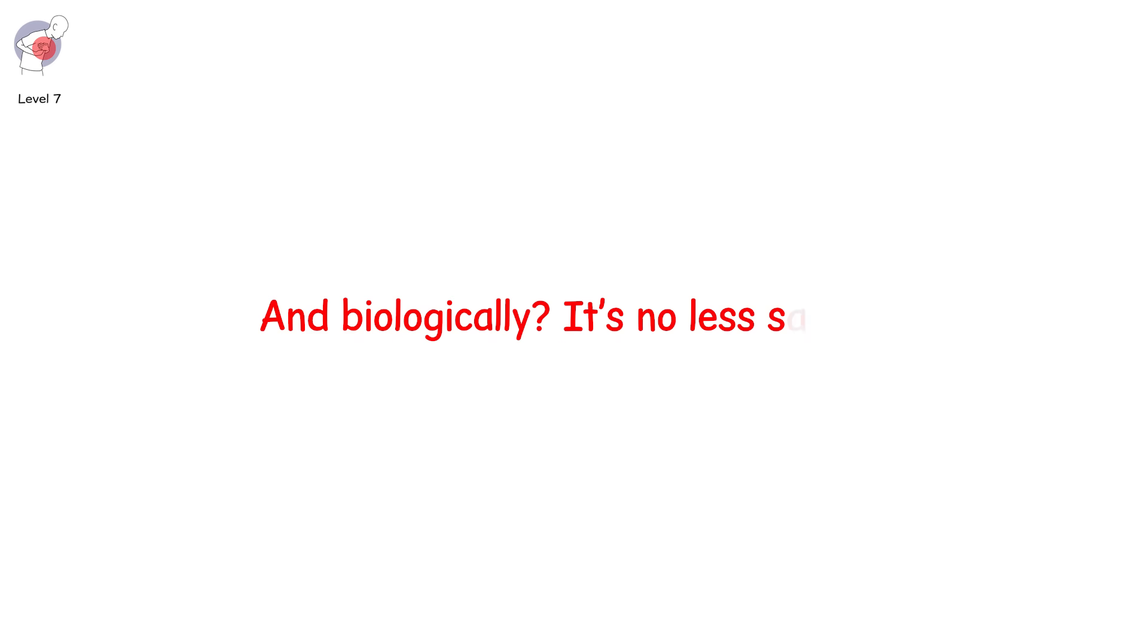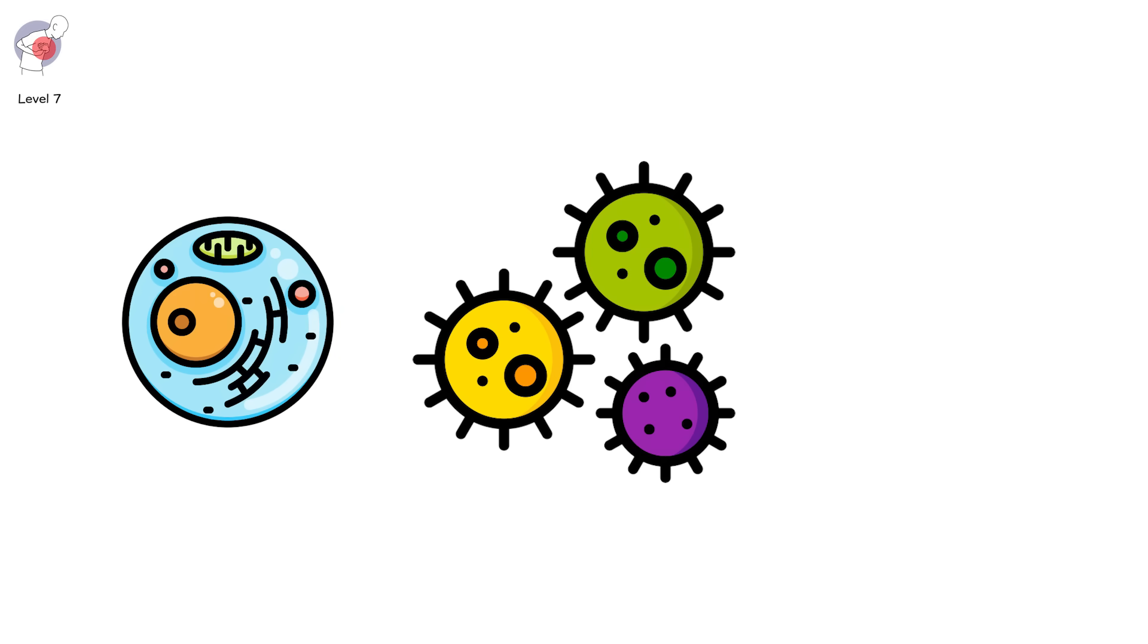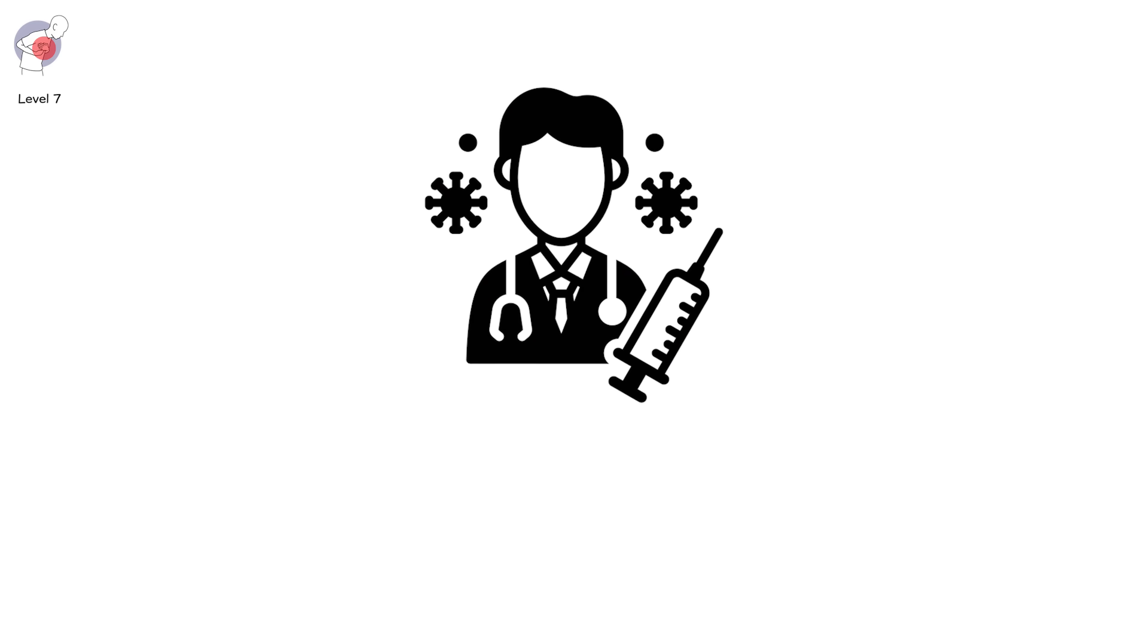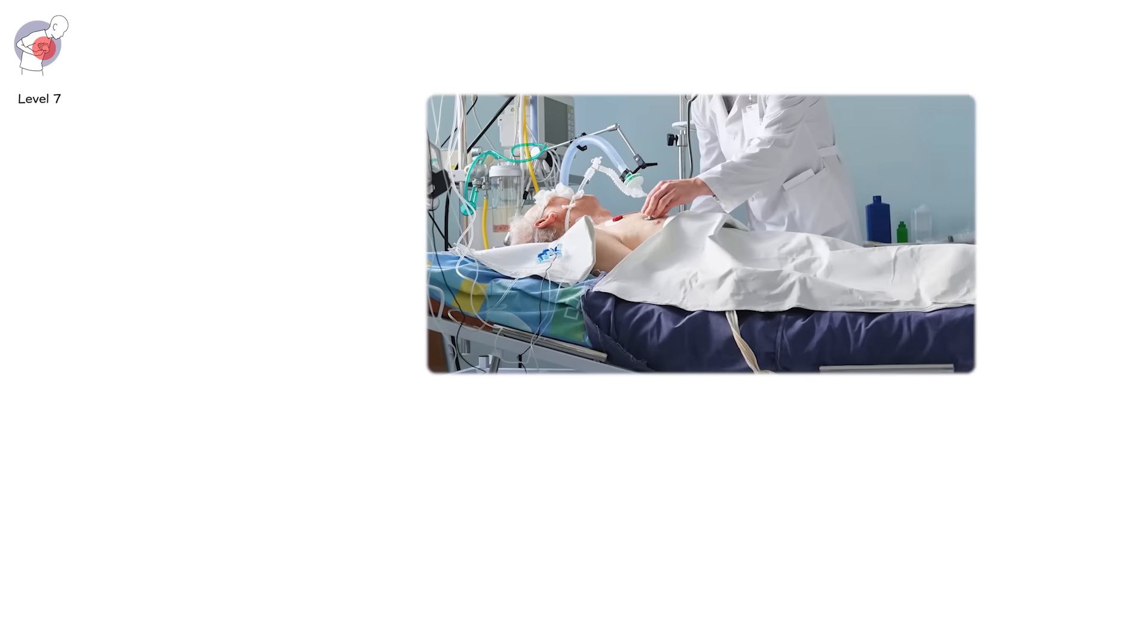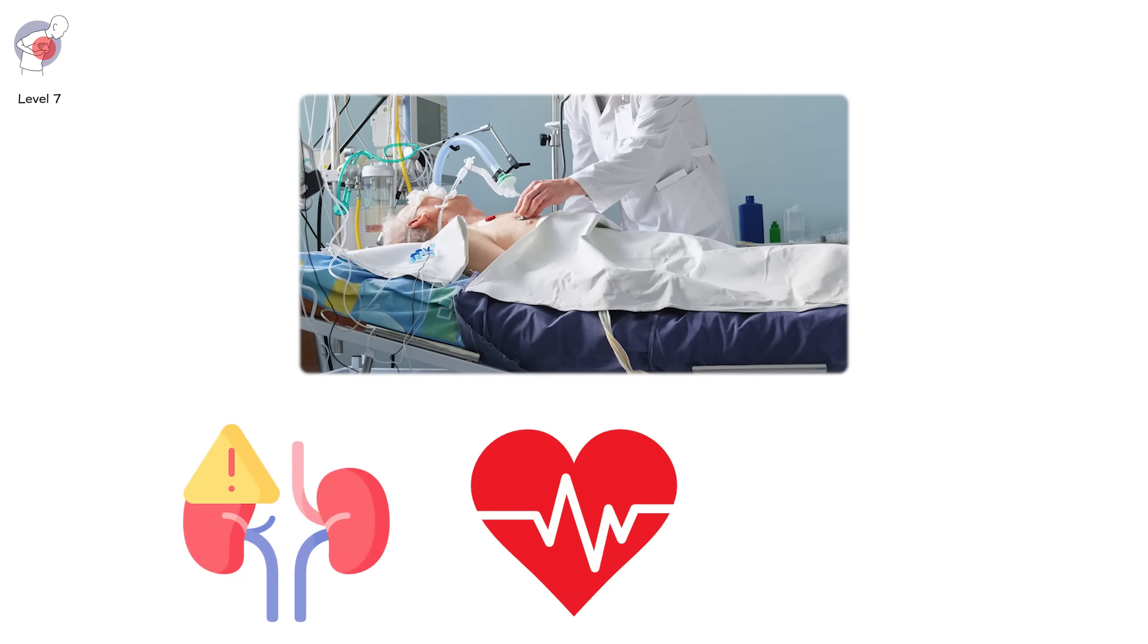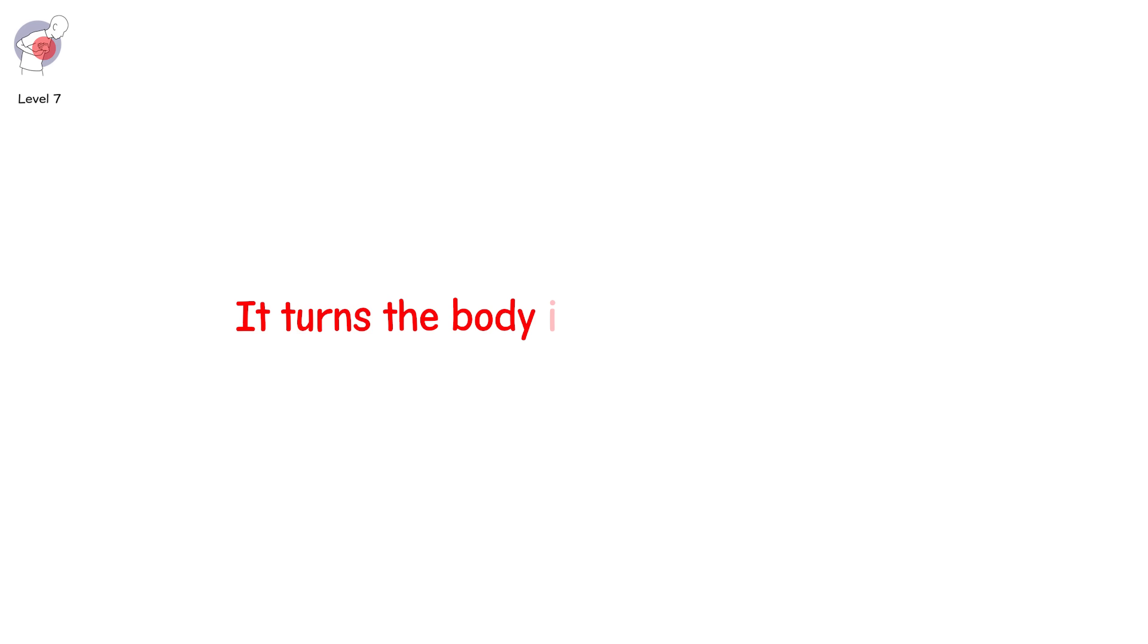And biologically, it's no less savage. A virus like this enters your respiratory system. But it doesn't stop there. It hijacks your cells. Makes them churn out copies. It confuses your immune response, tricking it into delay, then inciting overreaction. You might feel fine on day 2 and be gasping for air by day 9. The worst part? The spectrum. Some people? Asymptomatic. Others? In the ICU on ventilators, drowning in their own inflammation. It's not just lungs. COVID hits the heart, the kidneys, the brain. Blood clots become landmines inside your bloodstream. It turns the body into a domino system. One system failing can trigger the next.